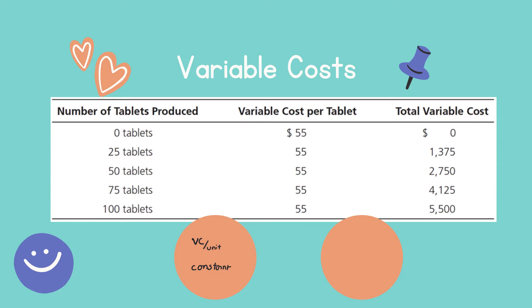For the total variable cost, it's going to increase with an increase in units, and it's going to decrease with a decrease in number of units.